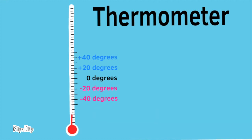Take another look. What's the temperature at the mercury's new location? The temperature reads negative 60 degrees, or 60 degrees below zero.